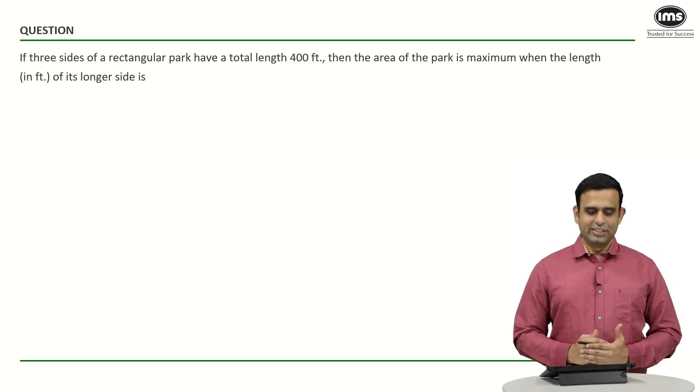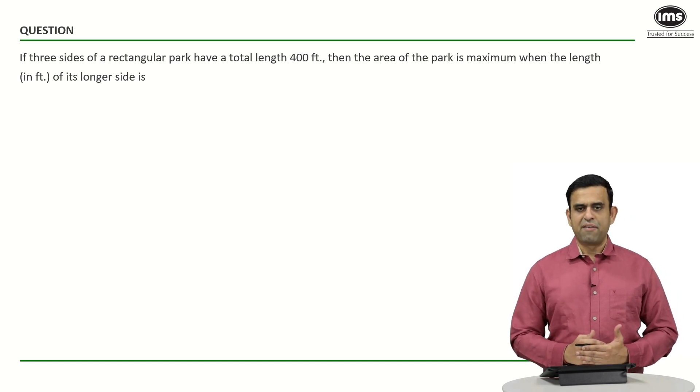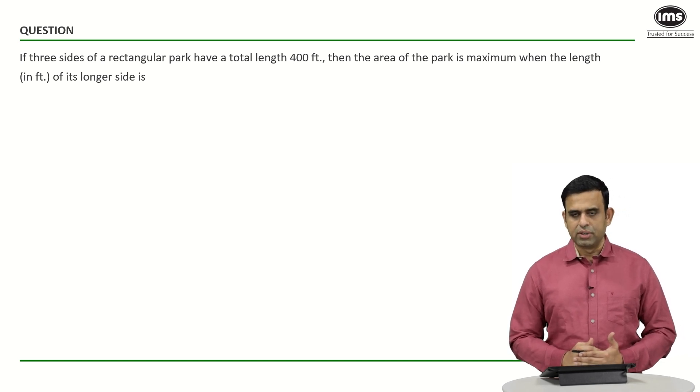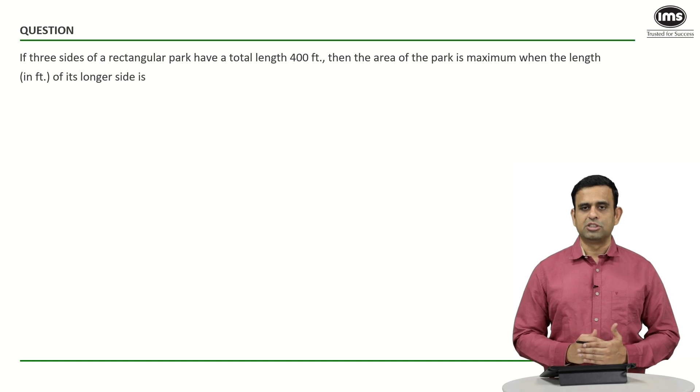The question goes like this: if three sides of a rectangular park have a total length of 400 feet, then the area of the park is maximum when the length of its longer side happens to be how much?